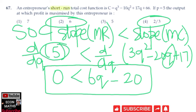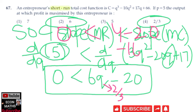We will check each value. If Q = 2/3, then 6(2/3) - 20 = 4 - 20 = -16. Since -16 is not greater than 0, the second order condition is not satisfied. So Q = 2/3 is not the correct profit-maximizing output.